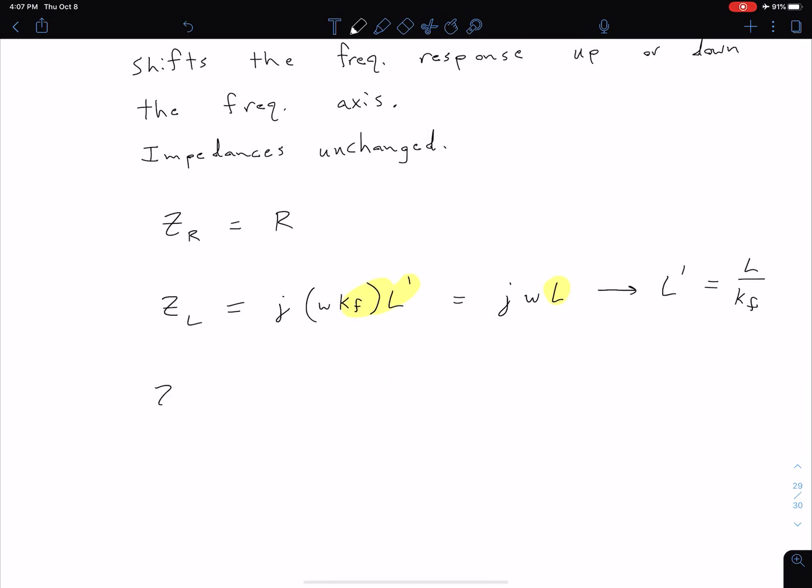Similar approach for our capacitor impedance. We know our capacitor impedance is 1 over j omega C, but now we're scaling this frequency by factor kf, giving us 1 over j omega kf C'. We want to leave impedances unchanged.